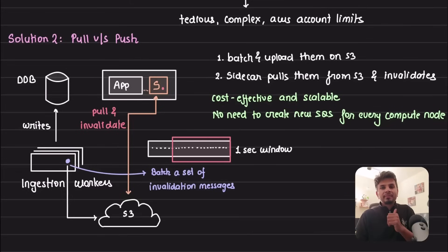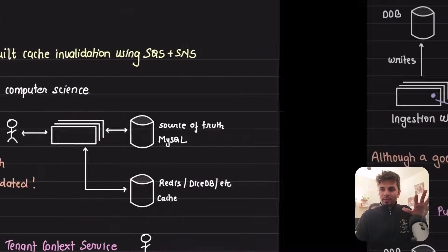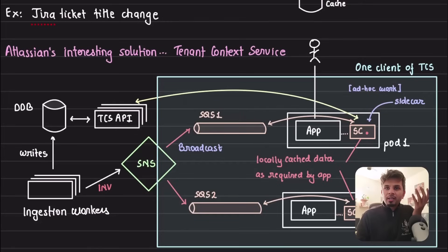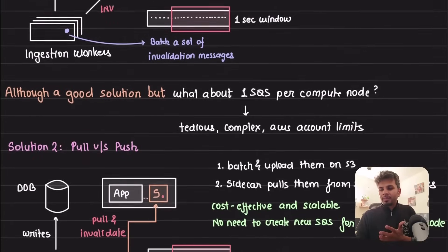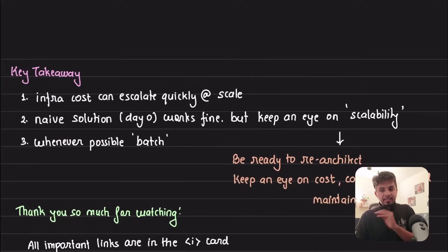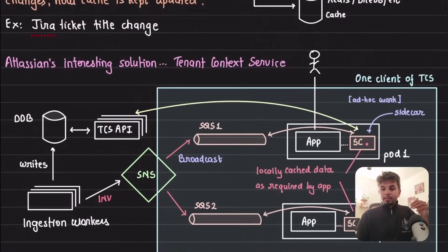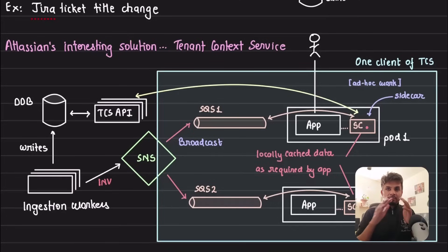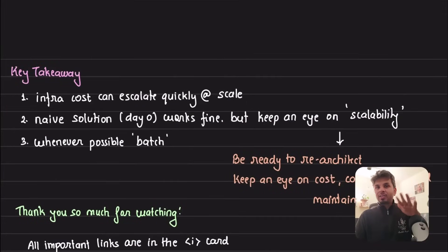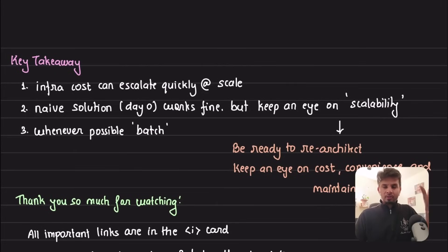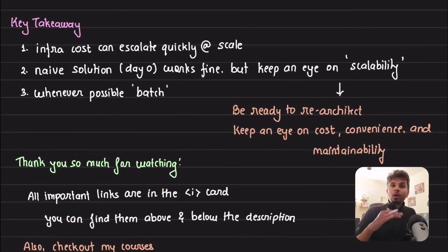Few key takeaways that we understand. These are very essential when you are starting and your company scales. First thing first: your infrastructure cost can escalate very quickly at scale. The more the clients of tenant context service, your fanout of messages is increasing. Although it looks like a pretty simple system to implement, your infrastructure cost can scale very quickly if you do not have things in control. Second, this is the most critical one: your naive solution which you deployed on day zero works fine, all good, but keep an eye on scalability.